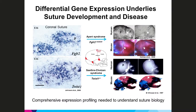In the top panel, FGF receptor 2 is expressed in the osteogenic fronts of the parietal and frontal bones. In the bottom panel, Twist1, which regulates FGF receptor 2 expression, is expressed in both the suture mesenchyme and the osteogenic fronts.